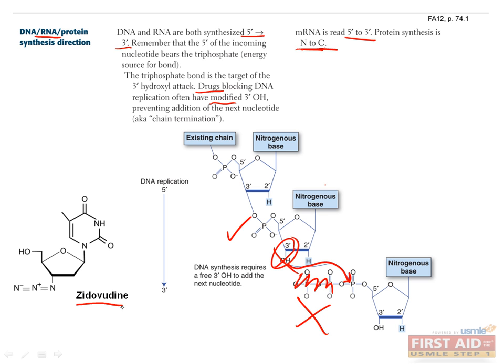For example, the thymidine analogue zidovudine, also known as AZT, is used to treat HIV because the viral transcriptase will add it to the growing strand, but then can't build off of it any further since it's missing the 3' hydroxyl group. The azido group, shown here, helps across the lipid bilayer to get into cells. Stavudine is also used to treat HIV using the same mechanism, only instead of replacing the hydroxyl group with an azido group, it's just been removed.